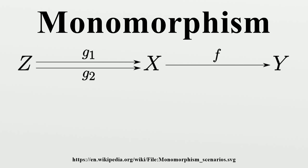For example, in the category Group of all groups and group morphisms among them, if H is a subgroup of G, then the inclusion f: H to G is always a monomorphism, but f has a left-inverse in the category if and only if H has a normal complement in G.